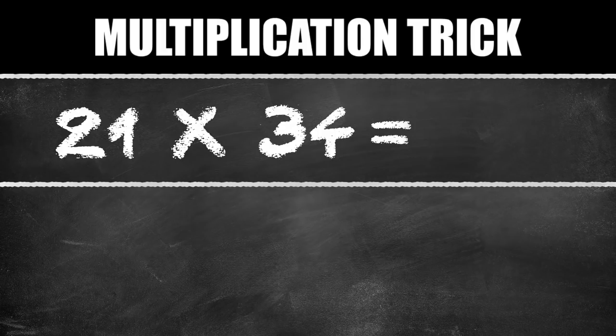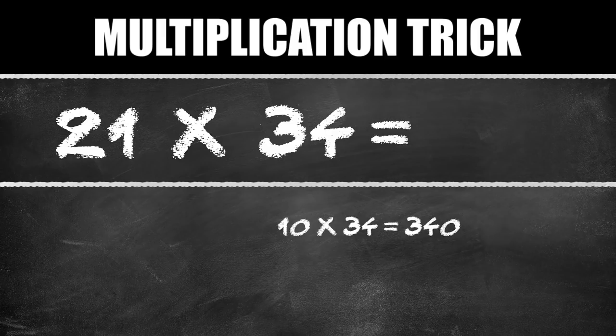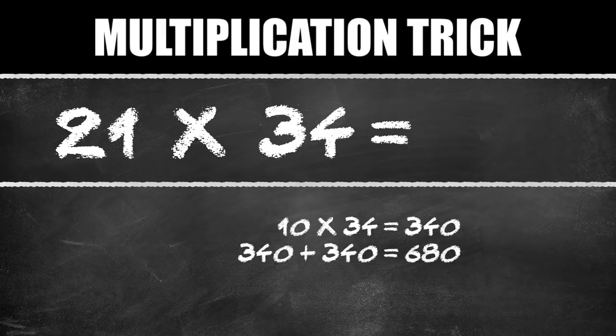First, let's see how many tens go into 21. Of course, 10 goes in twice. So first we calculate 10 times 34. That's 340. Since 10 goes in two times, we add 340 to 340 and get 680.